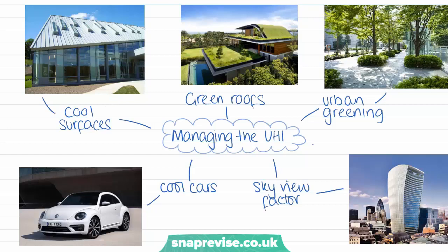The next strategy is to use green roofs. These green roofs consist of growing a medium such as grass planted over a waterproof membrane on a roof, and this can help to reduce the temperatures on the rooftop by about 20 to 40 degrees on a sunny day. In addition, these roofs are really helpful for the environment because they reduce rainwater runoff, they act as insulators, and they also increase urban biodiversity, bringing more plants and animals into the area and providing a good habitat for birds and butterflies and other small animals.